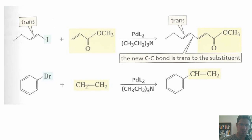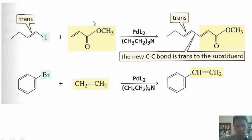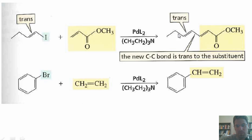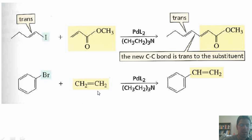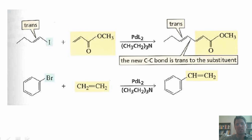Let me show some specific examples. A vinyl iodide reacted with an alkene bearing additional substituents, treated with Pd(L)2 and triethylamine: a bond forms between the carbon formerly bonded to the iodine and the terminal carbon in the alkene, and all the substituents on that side end up trans to each other in the product. In the second example, a phenyl bromide treated with ethene (ethylene) and Pd(L)2 and triethylamine gives a product where a bond forms between the phenyl carbon and one of the alkene carbons. This is the Heck reaction.